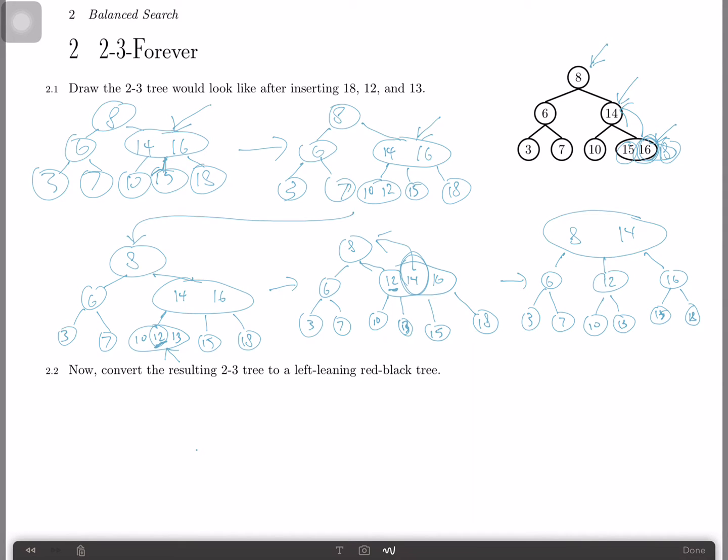So note here that this is a valid 2-3 tree, because every single node has less than or equal to two items in it, and every single node has one more child than the number of items in it. For example, the root node has two items in it, and it has three children, which is good. And then this node has one item in it, and it has two children. Same for the other two nodes. And leaves, because they are leaves, do not have any children. So this is the resulting 2-3 tree after you insert 18, 12, and 13 into our original tree.